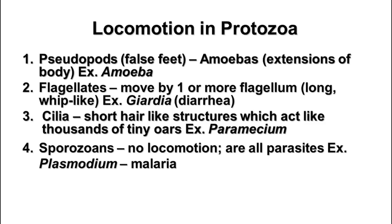The second group is the flagellates, which move by means of one or more flagella. A flagellum is a long whip-like structure, similar to the one in bacteria but more complex and much larger. Flagella are made of an arrangement of microtubules and move in a spiral fashion, acting more like a propeller. An example is giardia, which you can get from drinking unpurified stream water, causing a diarrhea-type illness.